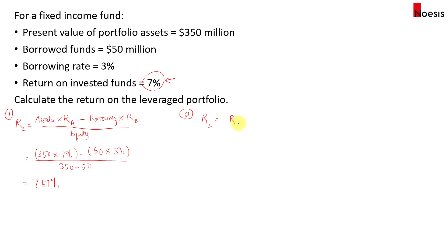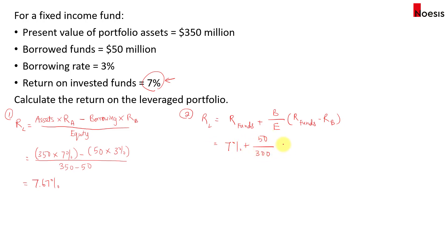The other way is to use another formula where we take the return on the invested funds, plus the amount of borrowing over the equity amount, multiplied by the spread — the return on the funds minus the return on the cost of borrowing. So we take 7% plus $50 million over $300 million equity, then multiply by 7% minus 3%.